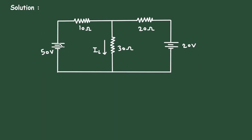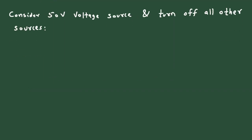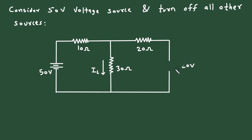Solution: first of all, let's consider the 50V voltage source and turn off all other sources. When we turn off all other sources, that is the 20V source, it will be short circuited. So let's copy this circuit and turn off this voltage source — it will be short circuited — and let's call this current IL prime.